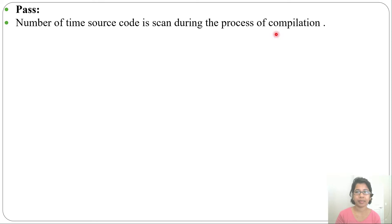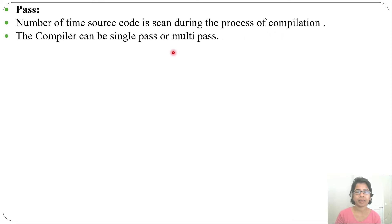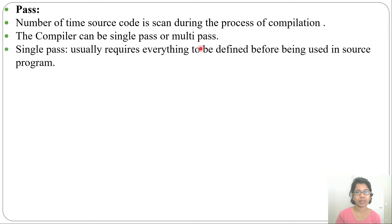The number of times the source code is scanned during the process of compilation is called a pass. A compiler can be single pass or multi pass.